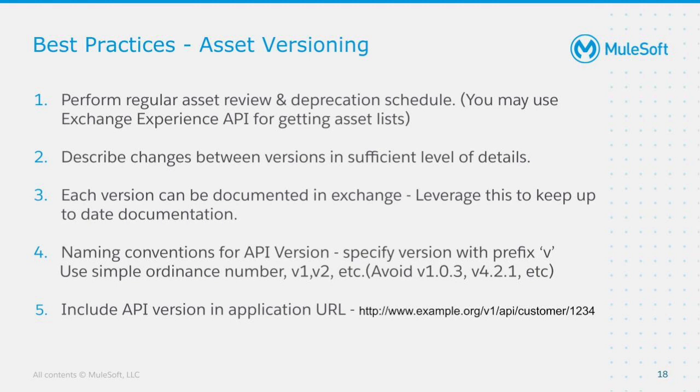One best practice for asset versioning is to perform a monthly asset review. For example, if you are an Exchange admin and you had 100 assets last month but now you have 150, you should identify what those 50 new assets are, who created them, whether old assets should be deprecated or deleted. Always document each version change — going from 1.0.0 to 1.2.0, for example — to differentiate how it varies from previous versions, and leverage asset versioning documentation for that. For API versions, always prefix with v, like v1 or v2 — do not make it complex with v1.0.0 or v1.0.23.